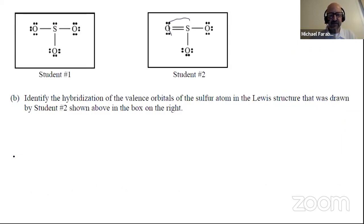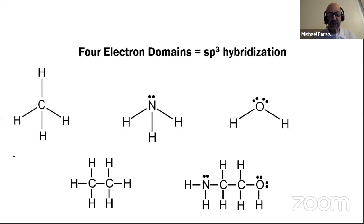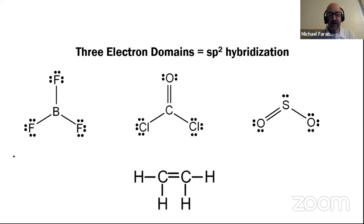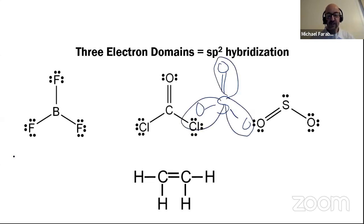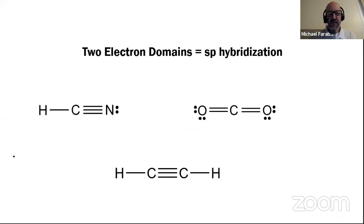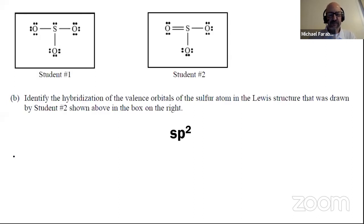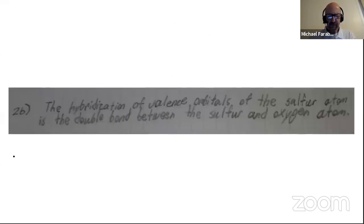Identify the hybridization of the sulfur in the Lewis structure drawn by student two. We have a total of three electron domains. If there were four electron domains, it would be sp3 hybridization. Because we have three electron domains — sulfur with three oxygens, and even though one is a double bond, we don't count that as an extra electron domain — that's sp2. If there were only two electron domains, it would be sp. A lot of students said sp2. If they got it wrong, most likely the wrong answer was sp3. One student confused bonding and hybridization, saying the hybridization was the double bond.